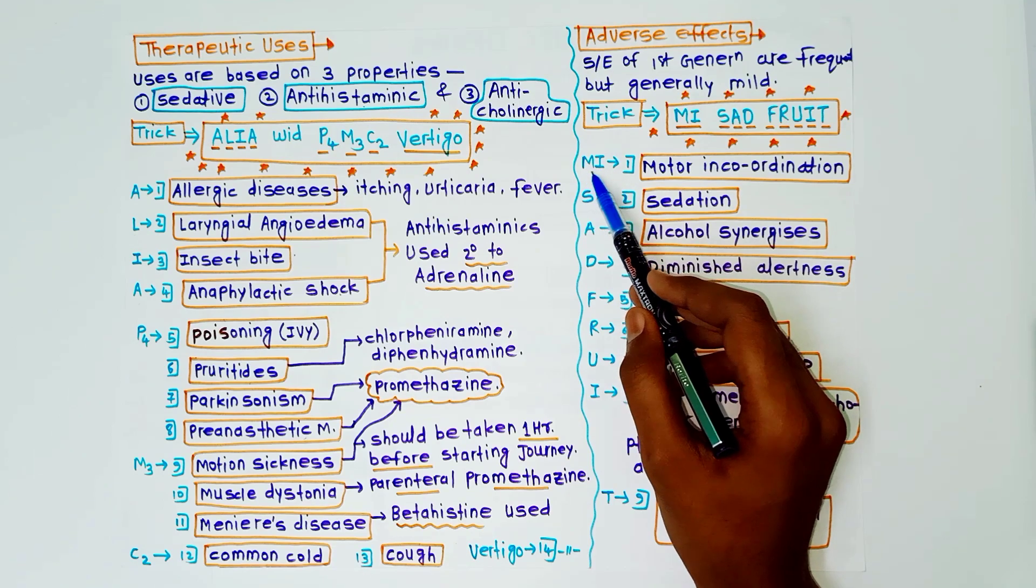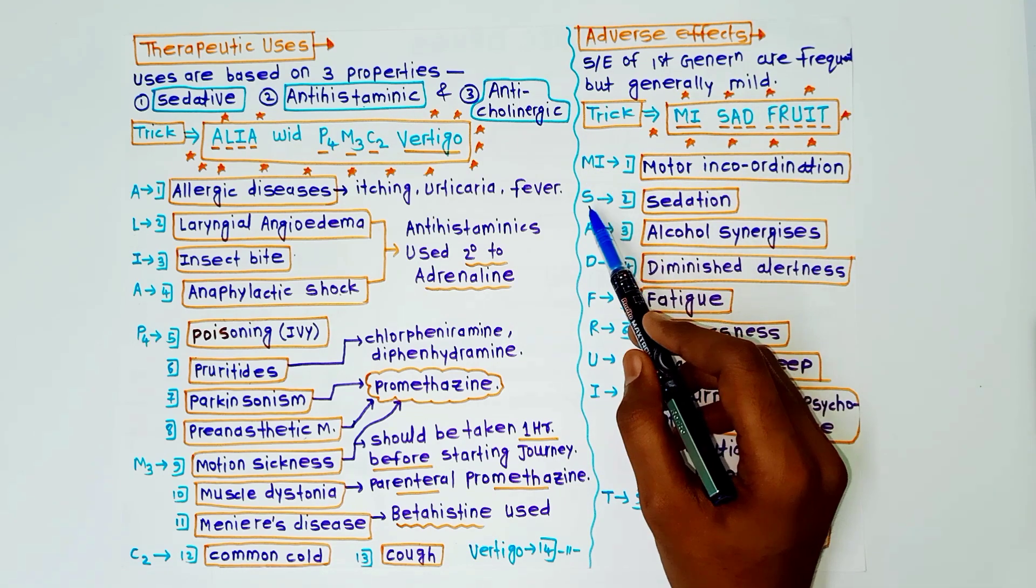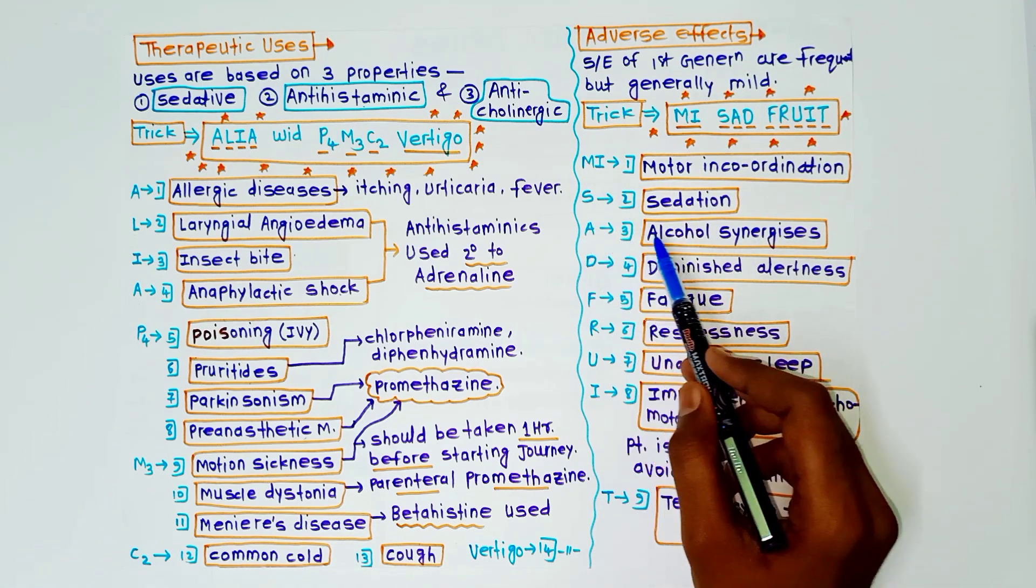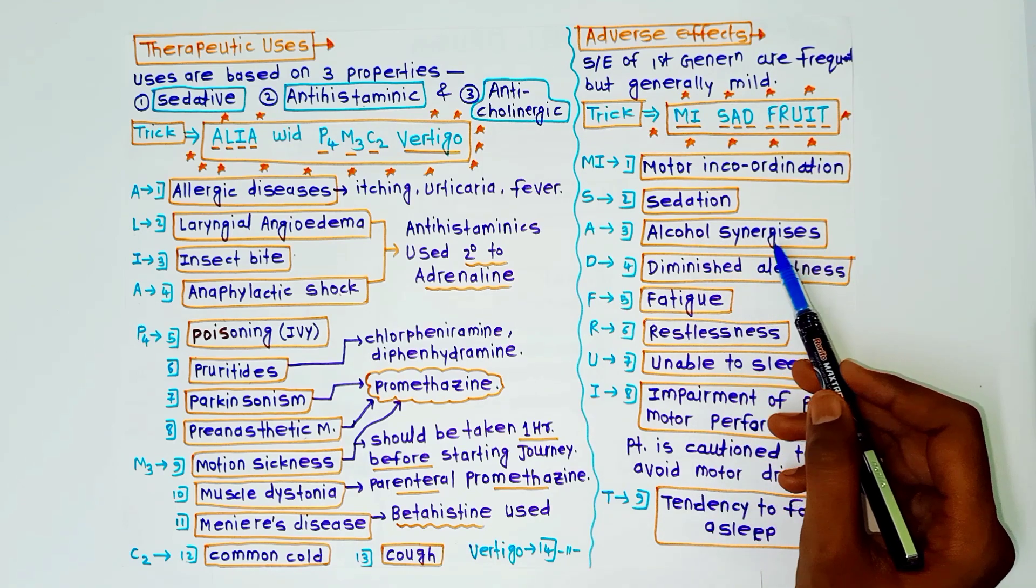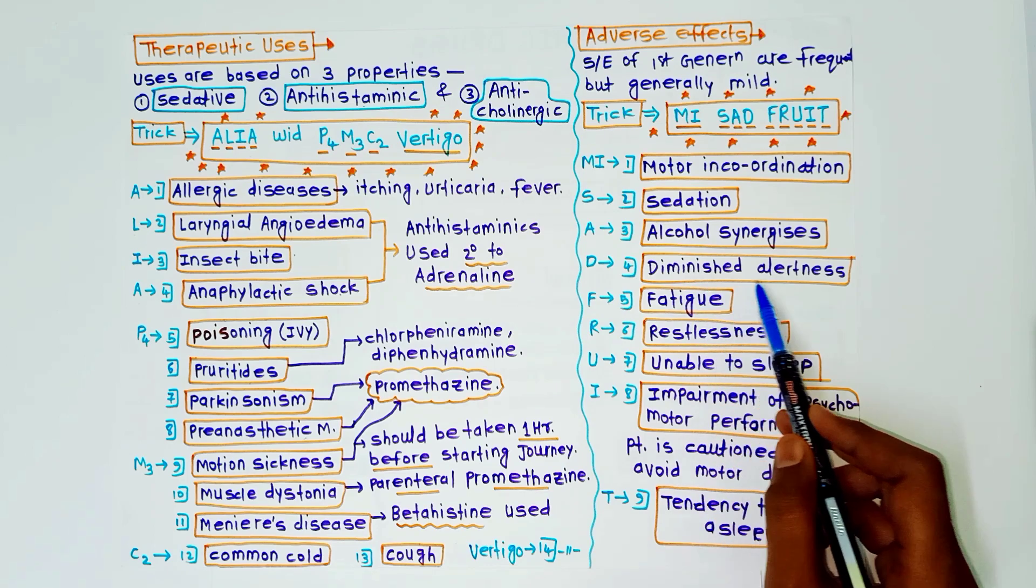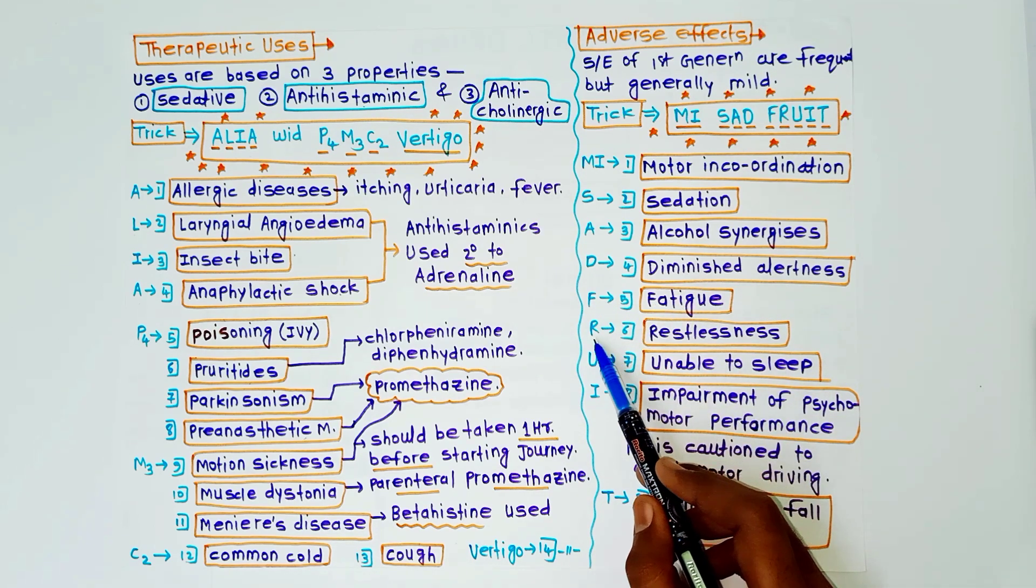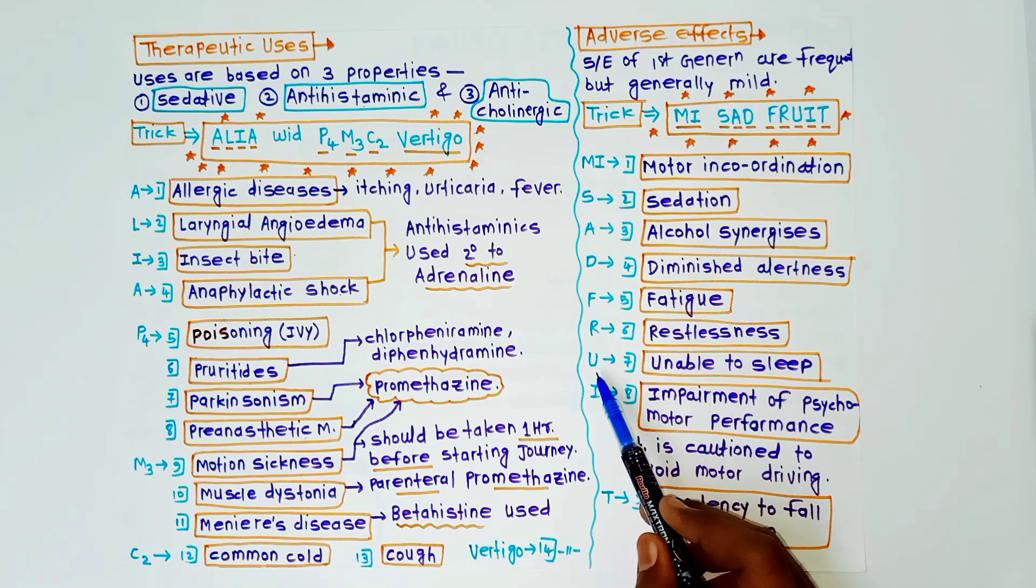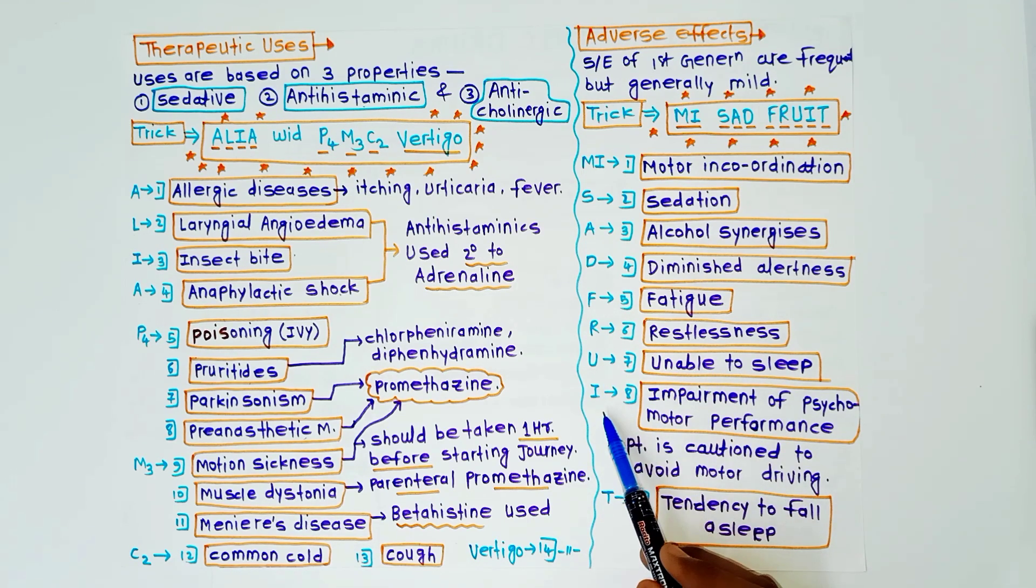MY SAD FRUIT. M for motor incoordination, Y for sedation, A for alcohol synergizes the effect, it means alcohol worsens the condition. D for diminished alertness, F for fatigue, R for restlessness, U for unable to sleep.